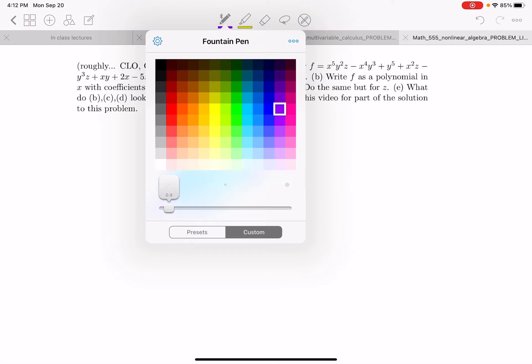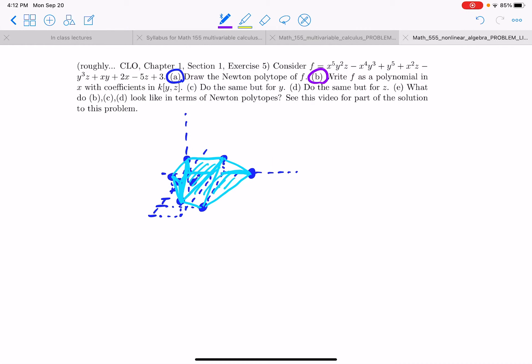Part B. Write f as a polynomial in x with coefficients in the others. Okay so let's take f equals x to the 0 times. Well we have 3 minus 5z. What else? Plus y to the fifth. Are there any other terms with x is 0? Oh yeah. Plus minus y to the third z. Okay.